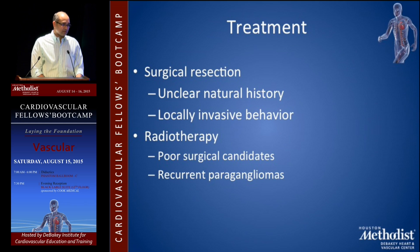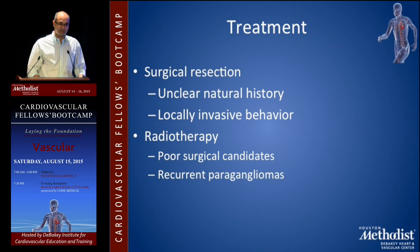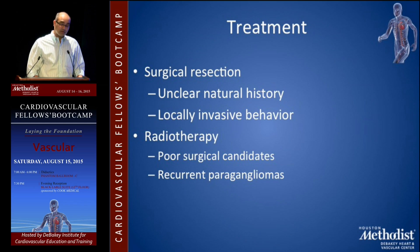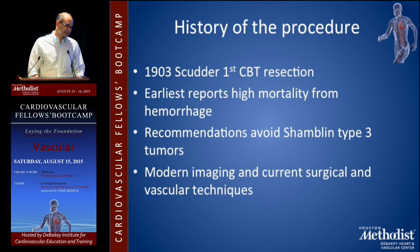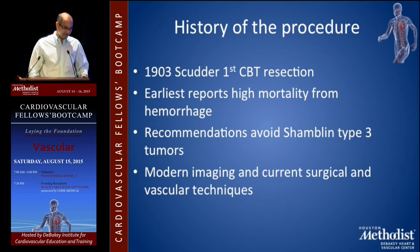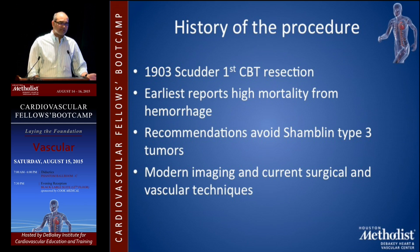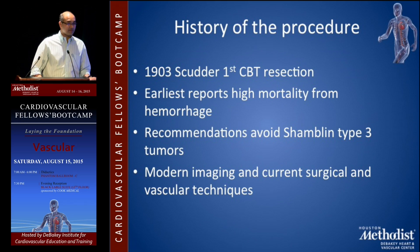Treatment is surgical resection — that is clearly the best option we know of for carotid body tumors. Unfortunately, the natural history is not well understood, and locally invasive behavior is also unknown, especially for Shamblin III tumors. Radiotherapy is reserved only for poor surgical candidates or recurrent paragangliomas. Carotid body tumor excision was first described in 1903 with early reports of high mortality from hemorrhage. Modern surgical and vascular techniques with preoperative embolization have helped reduce the fear around these tumors.